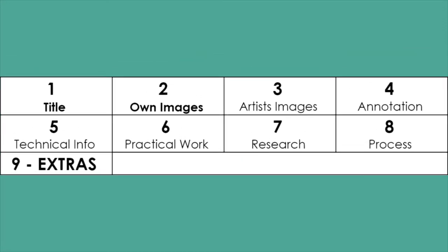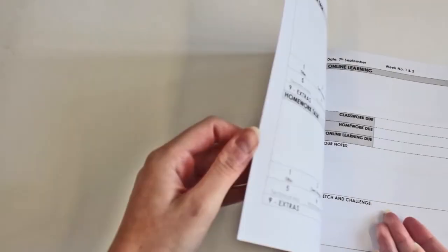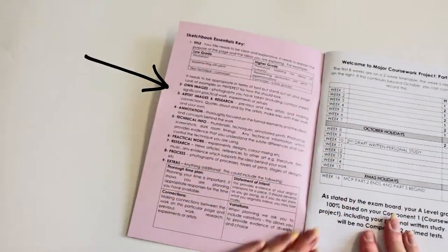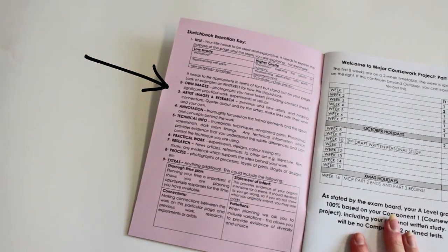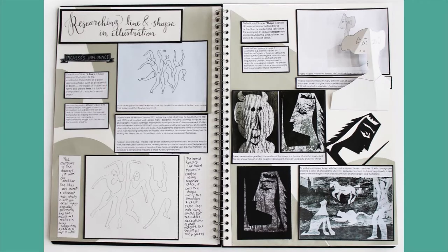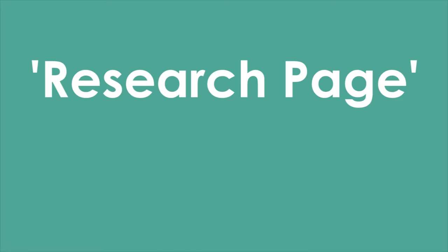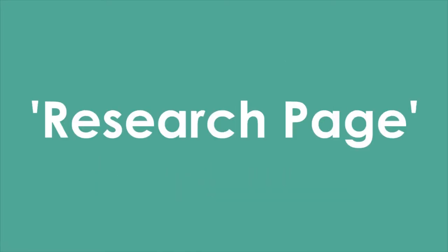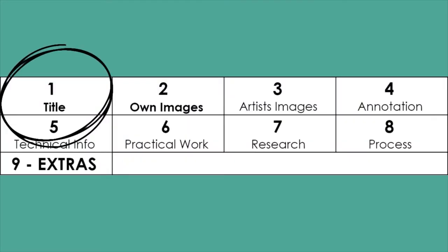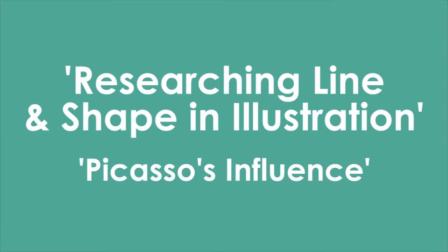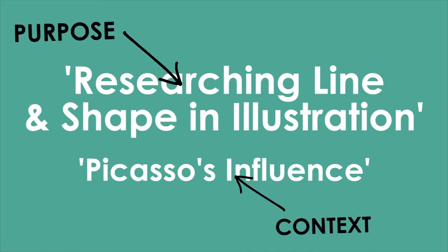However, the way in which you provide each element can indicate a low or high grade student. There's a key on the back of the front cover which will help you with the details of what you need to include. We're going to use a research page as an example. Going back to your title — 'Research page' is a lower grade title: it's literal and descriptive. Your title needs to be clear and explorative; it needs to explain the purpose of the page and the idea you're exploring. For example: 'Researching line and shape in illustration. Picasso's influence.' This simply explains the purpose of the page and the context of it within your work.